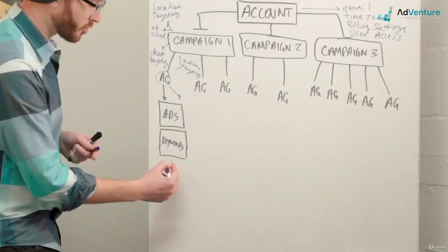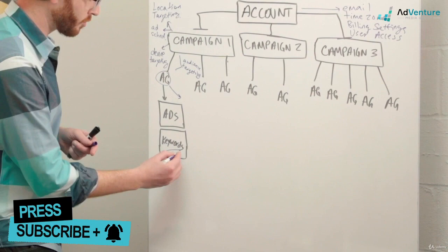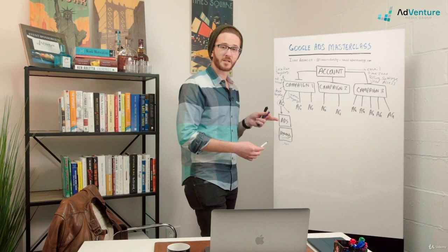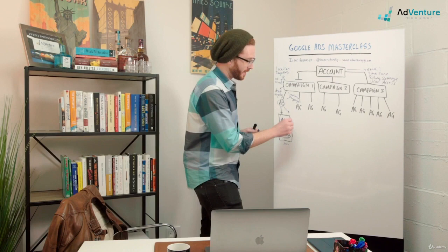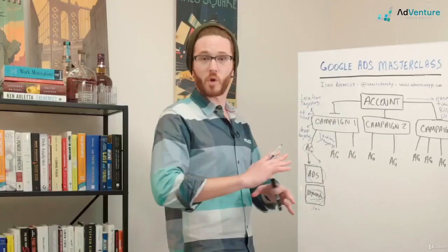You could have many, many different keywords and many different ads inside one ad group. And what that would mean is that all the ads inside one ad group, let's say you have 20 ads, they'll be eligible to be shown for any one of the keywords inside that same ad group. We'll talk about that once we get to writing ads and quality score and understanding keyword, thematically related groups of keywords and things like that.